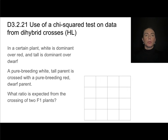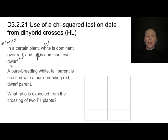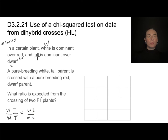Let's do an example. In a certain plant, white is dominant over red — I'll use big W and little w — and tall is dominant over dwarf, using big T and little t. A pure breeding white tall parent is crossed with a pure breeding red dwarf parent. Assuming these genes are linked, the pure breeding white tall parent is homozygous: WT over WT. The pure breeding red dwarf parent is wt over wt. All F1 offspring will have the genotype WT over wt.